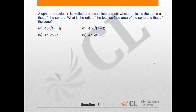Let us look at question number 8. A sphere of radius R is melted and recast into a cone, whose radius is the same as that of the sphere. What is the ratio of the total surface area of the sphere to that of the cone?